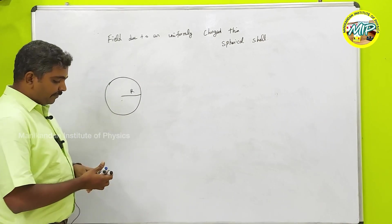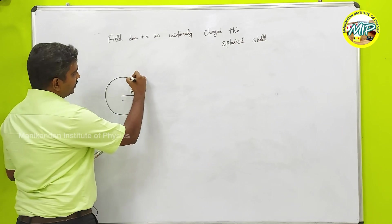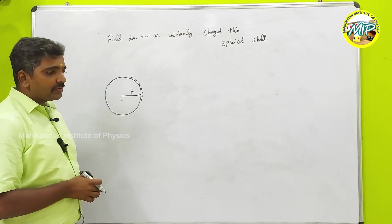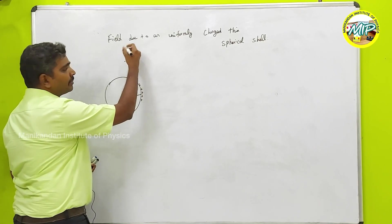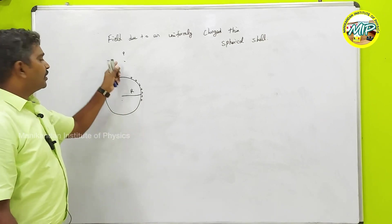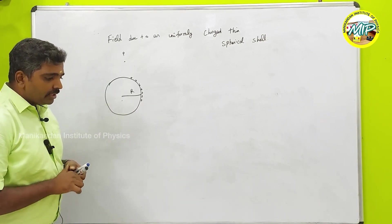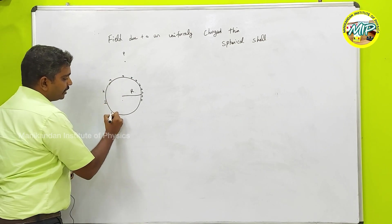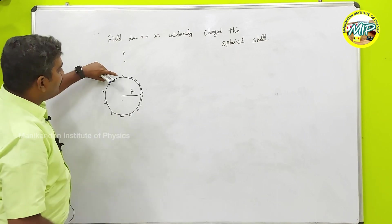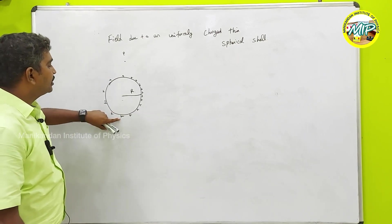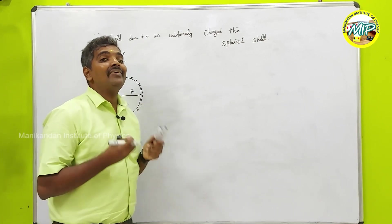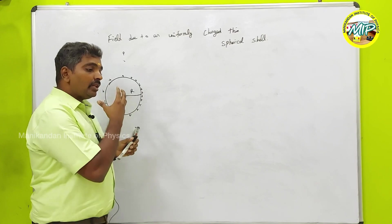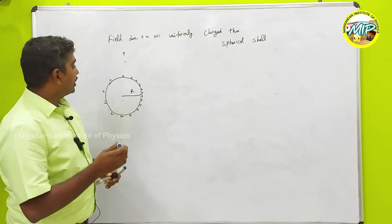We have a shell of radius capital R, and the charge is distributed on the surface of the shell — not inside. My target is to find the electric field at point P, some random point measured anywhere. The problem is I cannot use the simple electric field formula because the charge is uniformly distributed on the surface of the sphere, and the distance from each charge to point P is variable. So I am going to consider the total flux produced by this charge density, and then find the electric field from that.